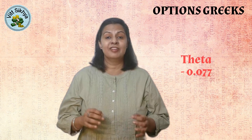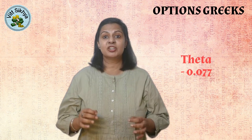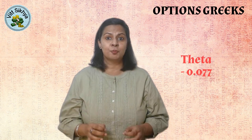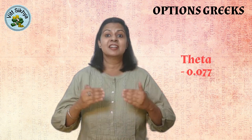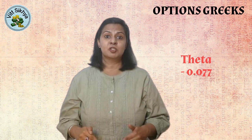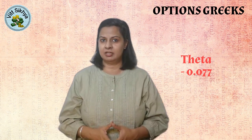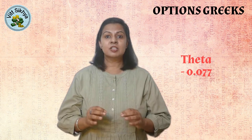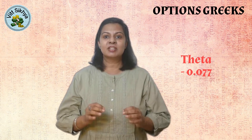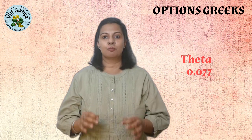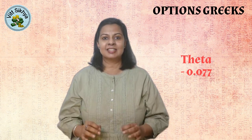The theta of negative 0.077 indicates that the option price will decrease by Rs. 0.077 for every day that passes, assuming all other factors remain the same. This is because time decay erodes the value of an option as it gets closer to expiration.